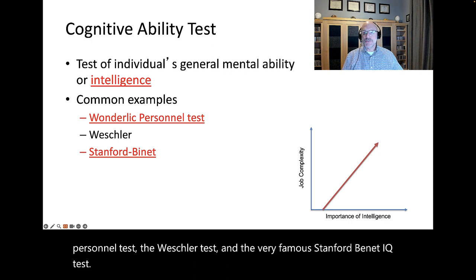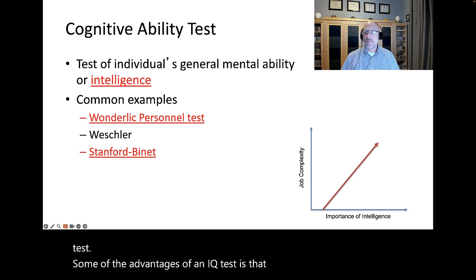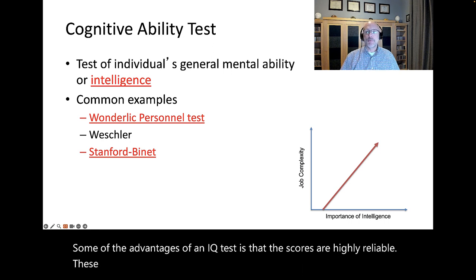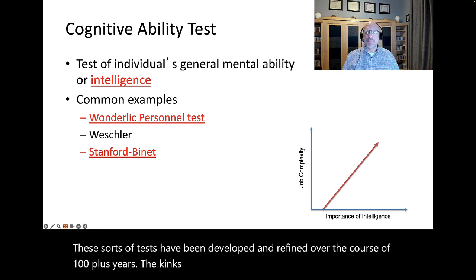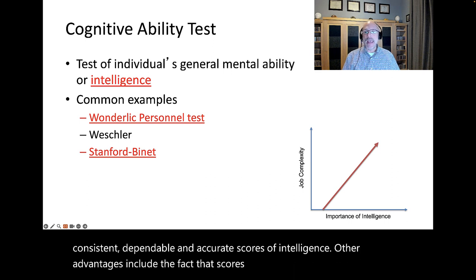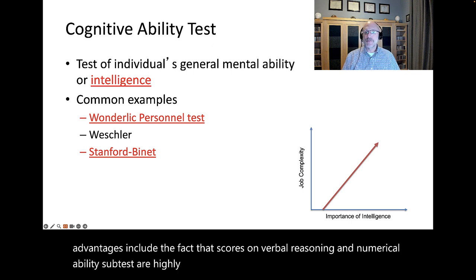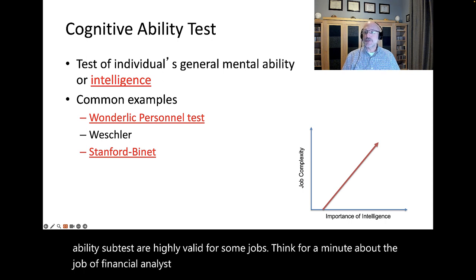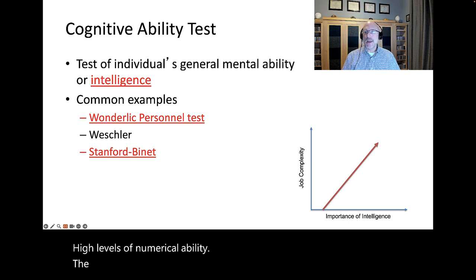Some common examples of intelligence tests include the Wunderlich Personnel Test, the Weschler Test, and the very famous Stanford-Binet IQ Test. Some of the advantages of an IQ test is that the scores are highly reliable. These sorts of tests have been developed and refined over the course of 100 plus years. Other advantages include the fact that scores on verbal reasoning and numerical ability sub-tests are highly valid for some jobs. Think for a minute about the job of financial analyst. It stands to reason that such positions require high levels of numerical ability. The job of attorney requires high levels of verbal reasoning.